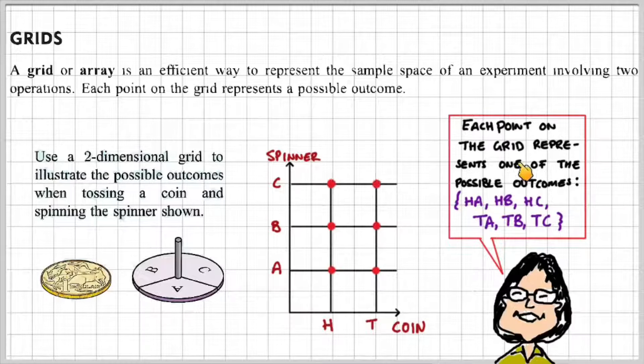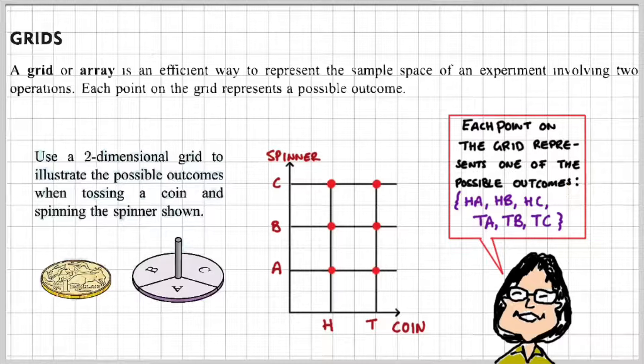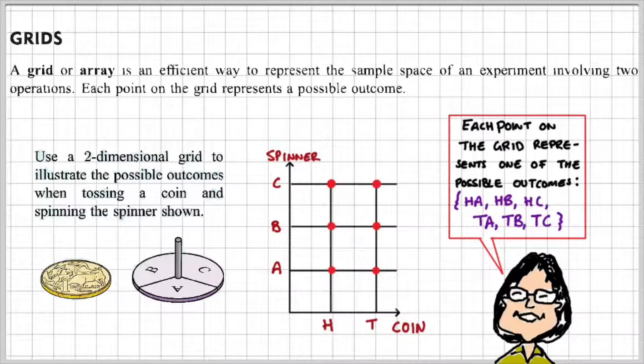Each point on the grid represents one of the possible outcomes. So in this case, we have the six possible outcomes of spinning a spinner with three sections and tossing a coin.